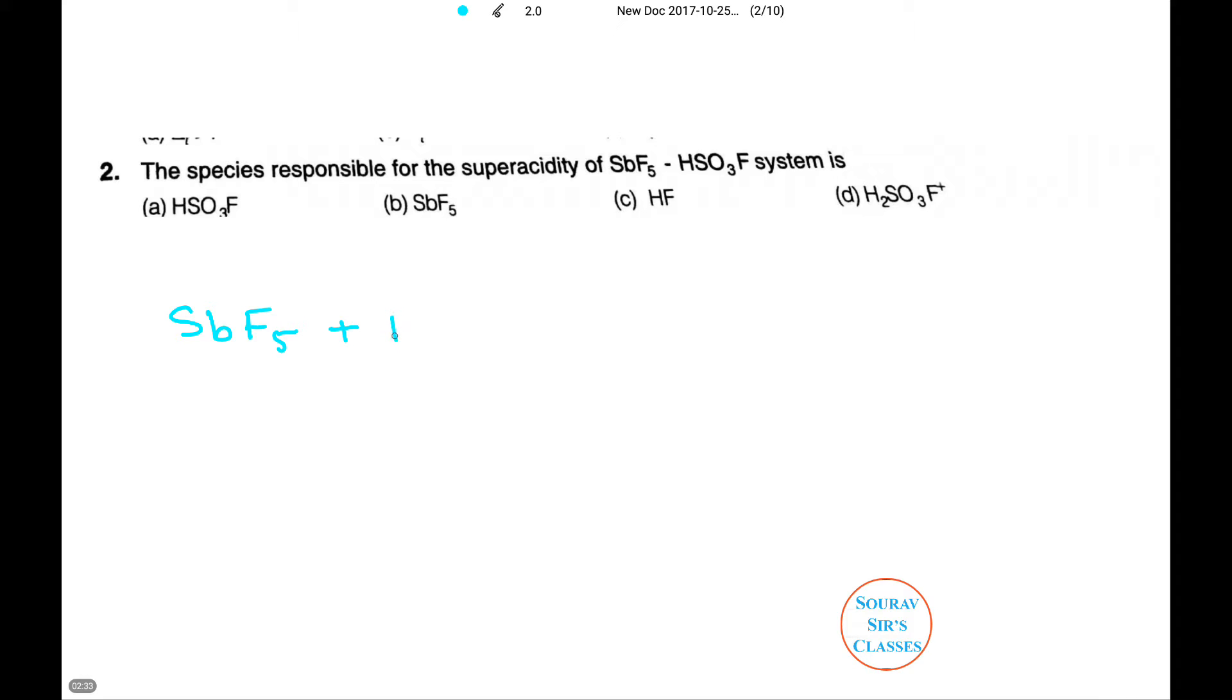SbF5 plus H2SO3F is a super acid system where fluorosulfuric acid is a very strong Lewis acid and it combines with H2SO3F to form SbF5-FSO3 along with H2SO3F+.